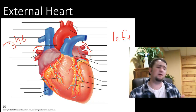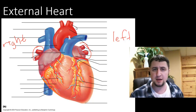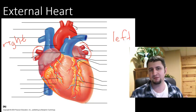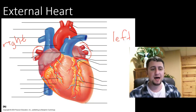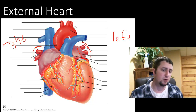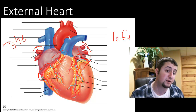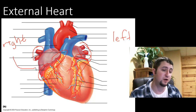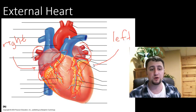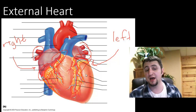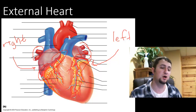One thing very important to understand here is that the heart is a muscle. And like all muscles, it needs to have a supply of oxygen. That oxygen comes from right here — the coronary arteries. There are two coronary arteries: the right coronary artery and the left coronary artery. You also have the right coronary cardiac vein and the left cardiac vein, which bring the blood back to the heart.